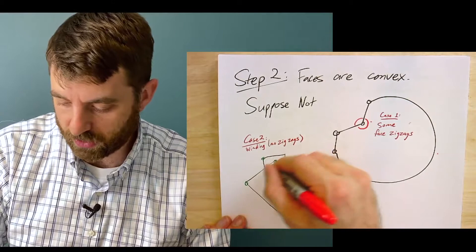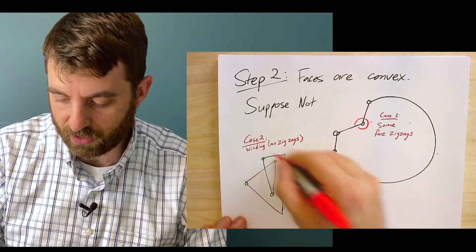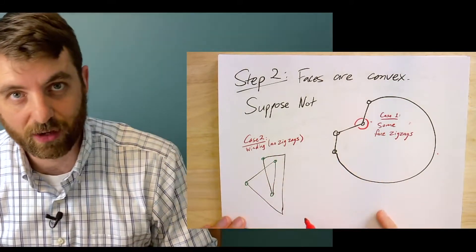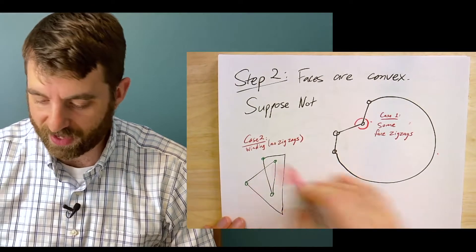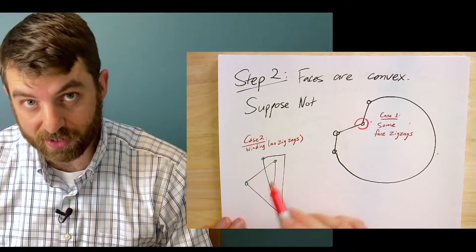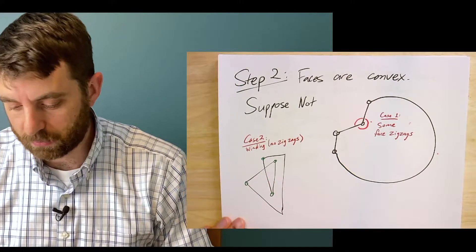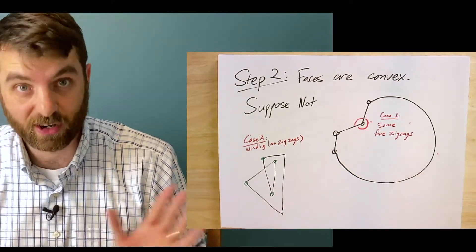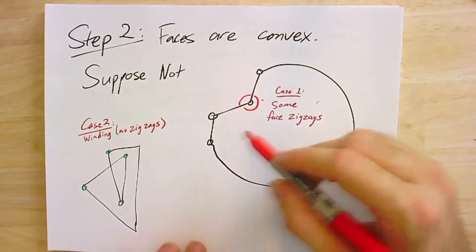You could have one where all angles are less than 180 degrees but it winds around two times. It has some kind of winding but no zigzags, so it will cross itself, and that's going to be good enough. Let's do these two cases. Case one: there's some zigzag.